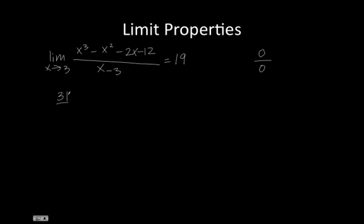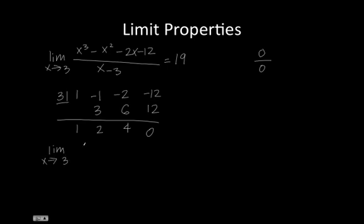So our synthetic substitution will look like this. Bring down the 1. 1 times 3 is 3. 3 minus 1 is 2. 2 times 3 is 6. 6 minus 2 is 4. 3 times 4 is 12. And now we can factor the numerator, and we get this.